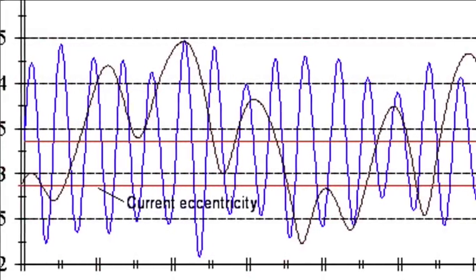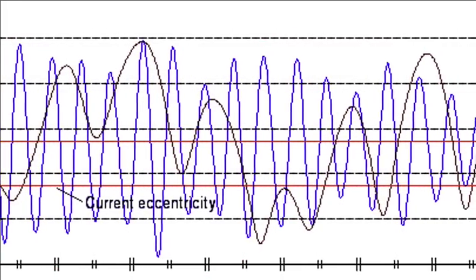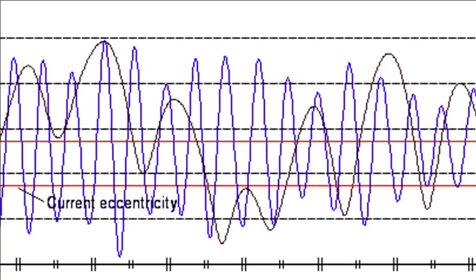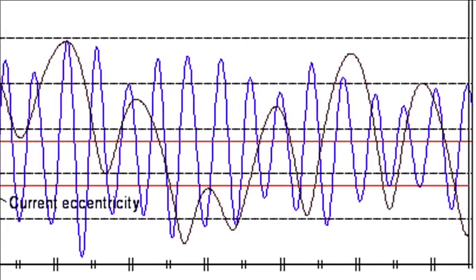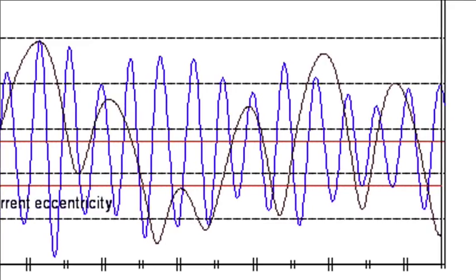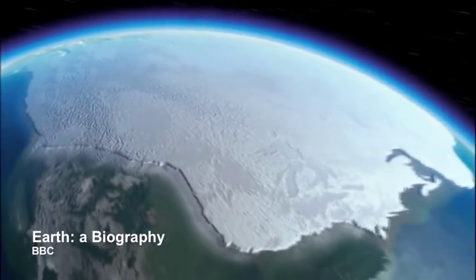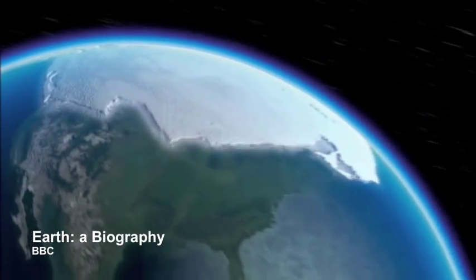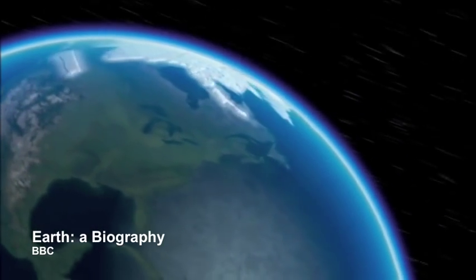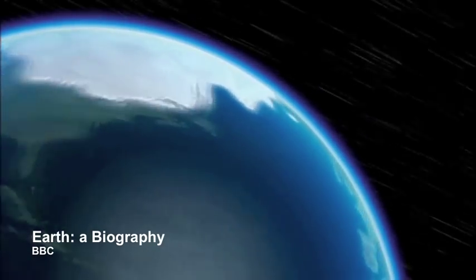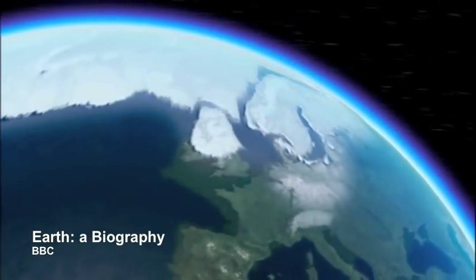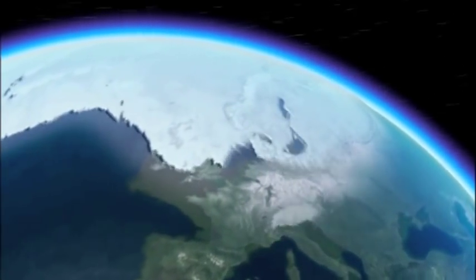The cycles sometimes work together and sometimes cancel each other out. But the end result is, about every 100,000 years, the planet goes into and out of a glacial period that we call an ice age. The last time they were in effect, they helped take us out of an ice age from 20,000 to 11,000 years ago. They will not be significant again until 20,000 to 30,000 years in the future, when another major cooling will begin.